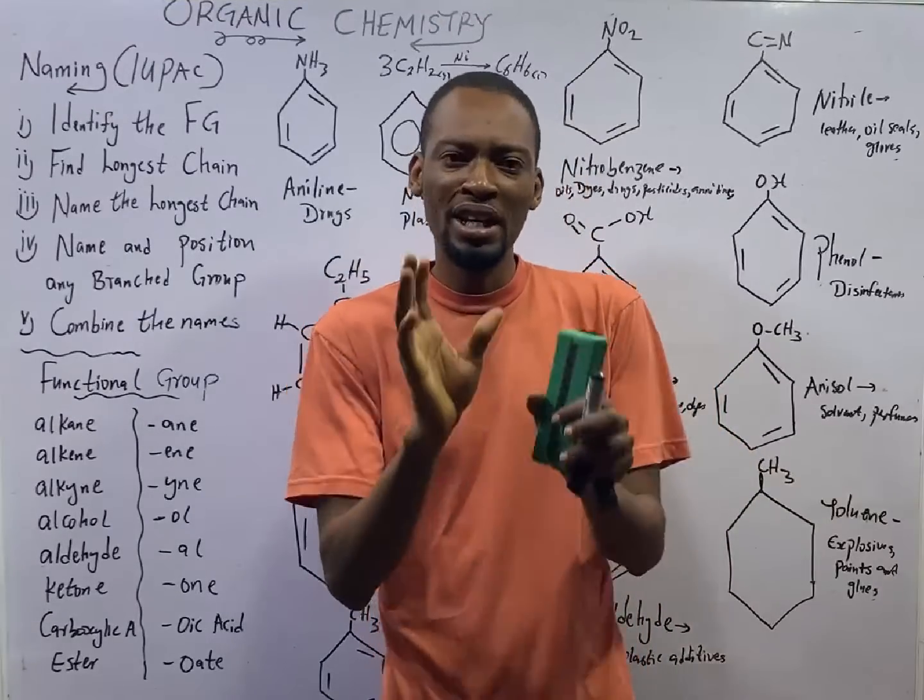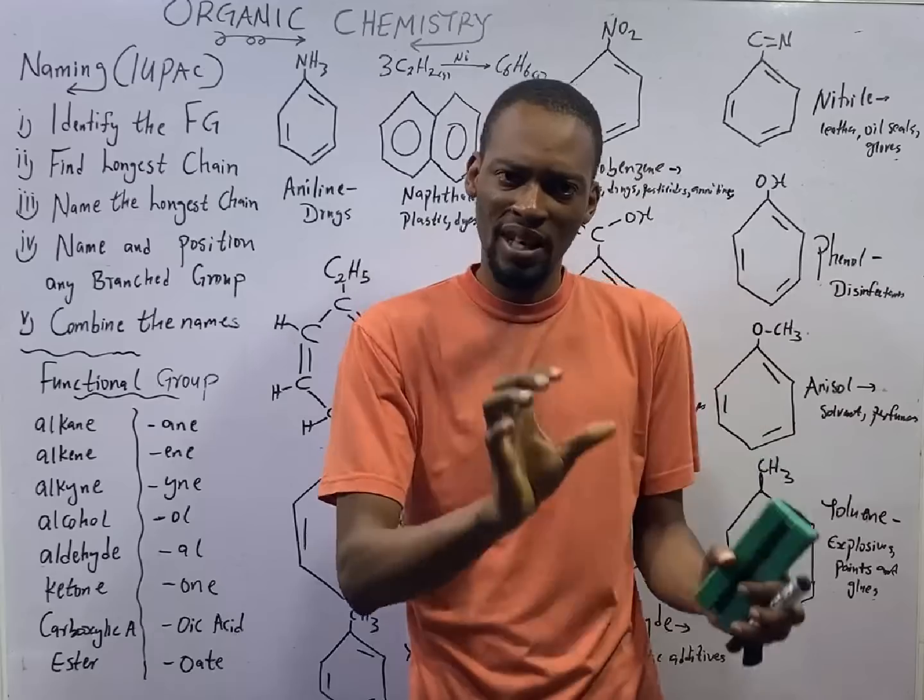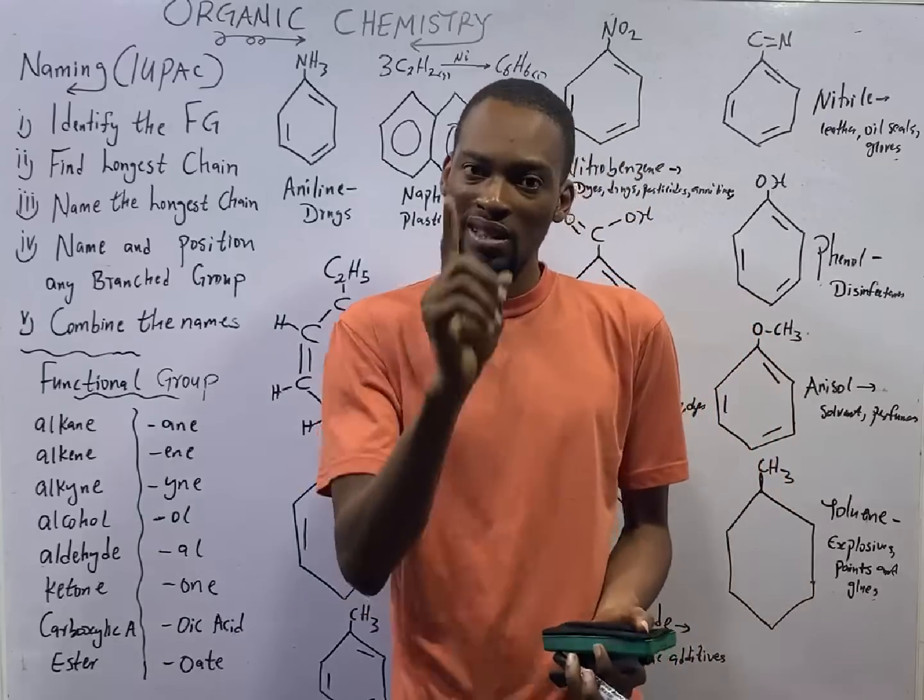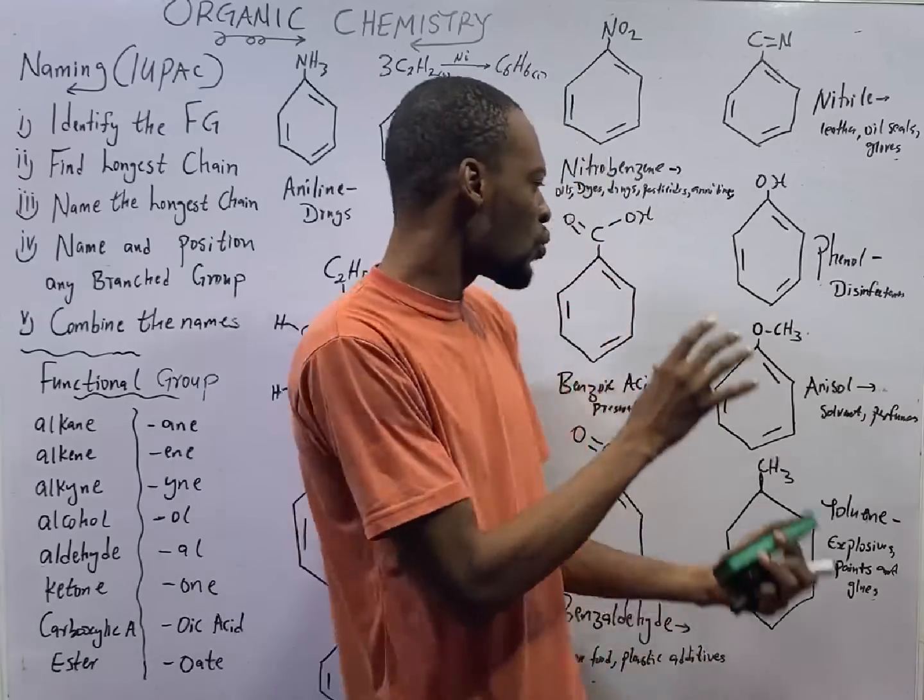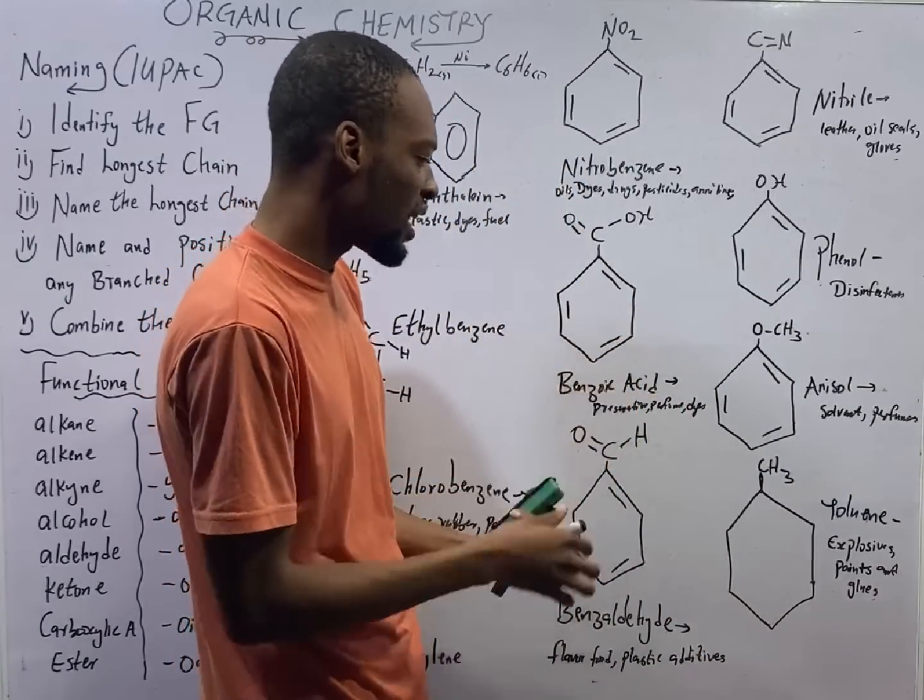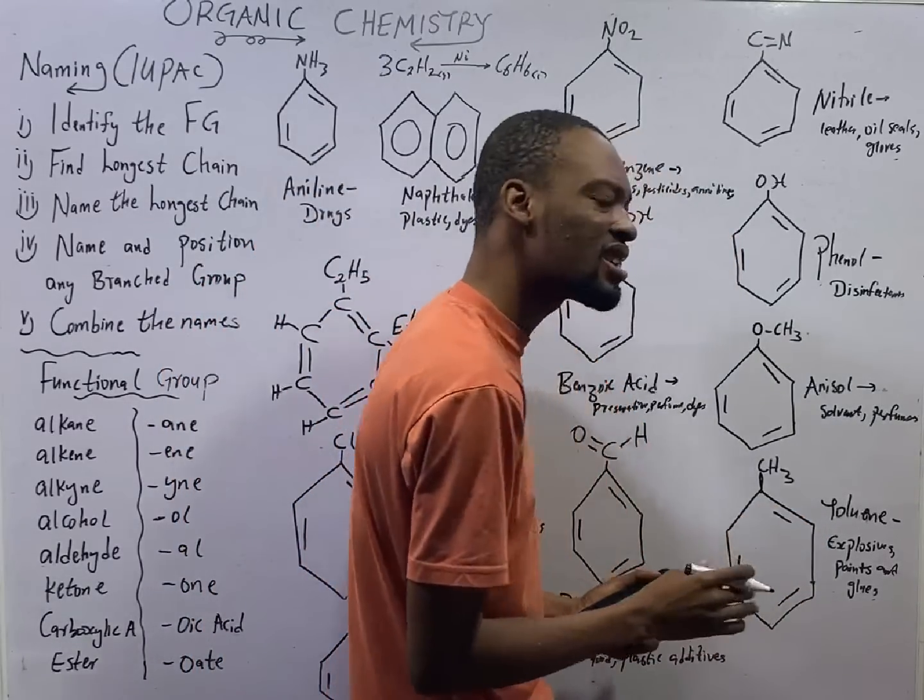This is episode number 82 of the 120 days to JAMB chemistry with Flash Isaac. In this episode, we shall be using one stone to kill so many birds. For example, in this episode we are naming organic compounds. Well, the organic compounds we are naming here is benzene, which is aromatic compounds.